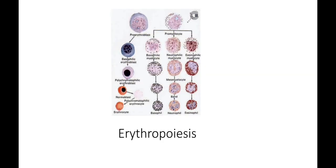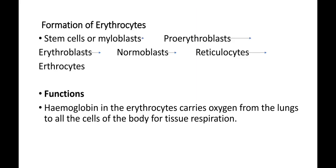Formation of Erythrocytes: Bhrun avastha se do mahine tak RBC ka formation yolk sac aur placenta mein hota hai. 2-5 mahine tak yeh liver, spleen aur thymus mein bante hain. Kintu adults mein yeh karye femur ki red bone marrow mein lifelong sampann hota rehta hai. RBC forming tissues ko hum erythropoietic tissues kehte hain.